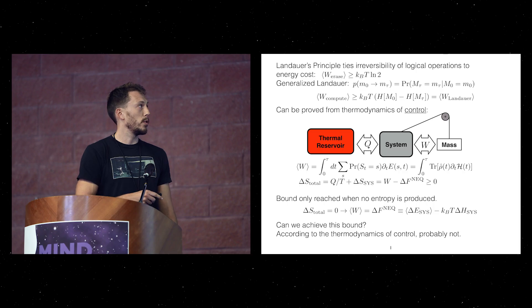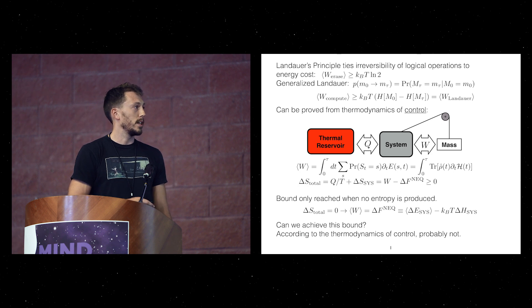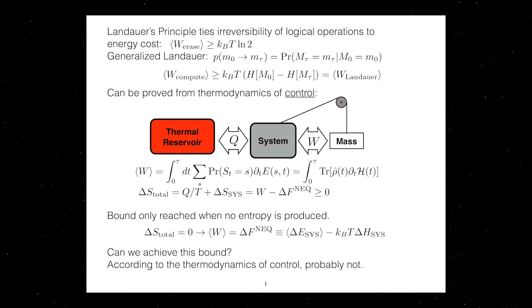But this is only achieved in the limit where the change in entropy of the total of the universe, which is the change in entropy of the thermal reservoir plus the change in entropy of the system, is only achieved when that's equal to zero. Because the work, which is the change in energy due to changes in the control parameter, is equal to the change in non-equilibrium free energy in that case.